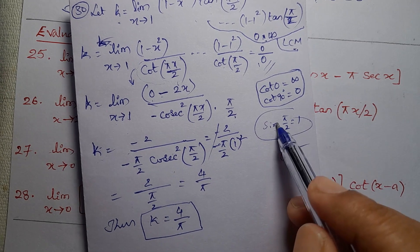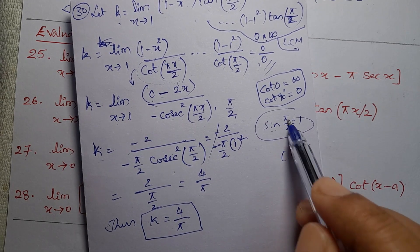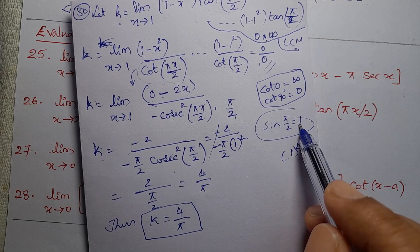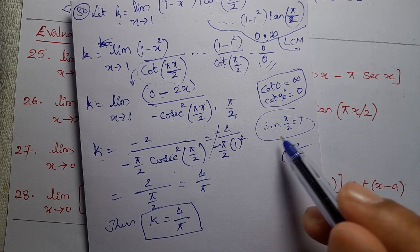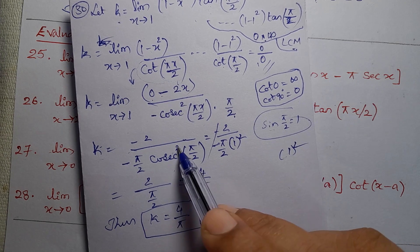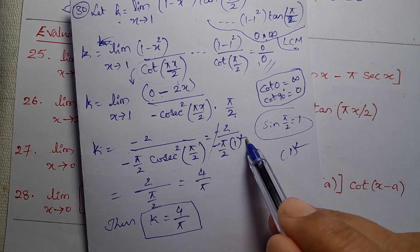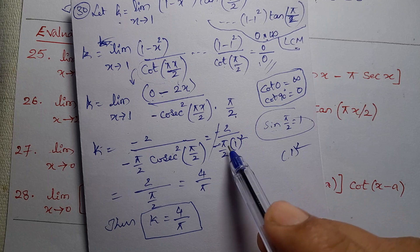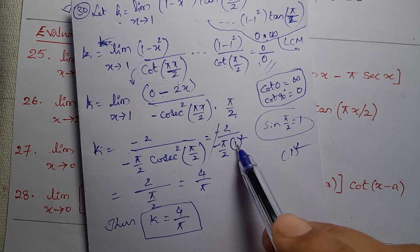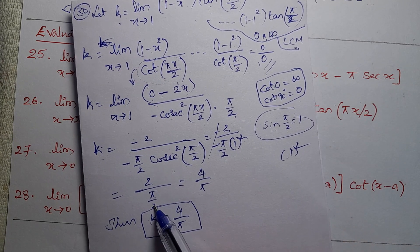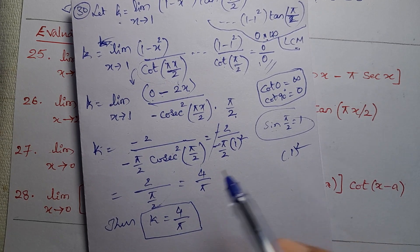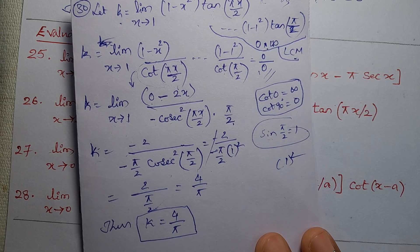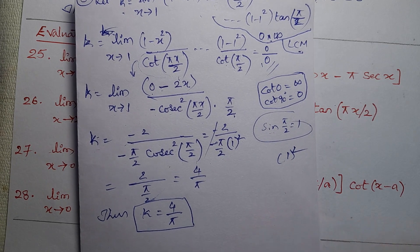We know sin(90°) = sin(π/2) = 1. Cosecant is the reciprocal of sine, so cosecant(π/2) = 1, and cosecant squared(π/2) = 1 squared = 1. So the denominator is π/2 times 1 = π/2. The 2 in the numerator and the 2 in the denominator give 4/π. Thus K equals 4 divided by π is the answer. Thank you so much.